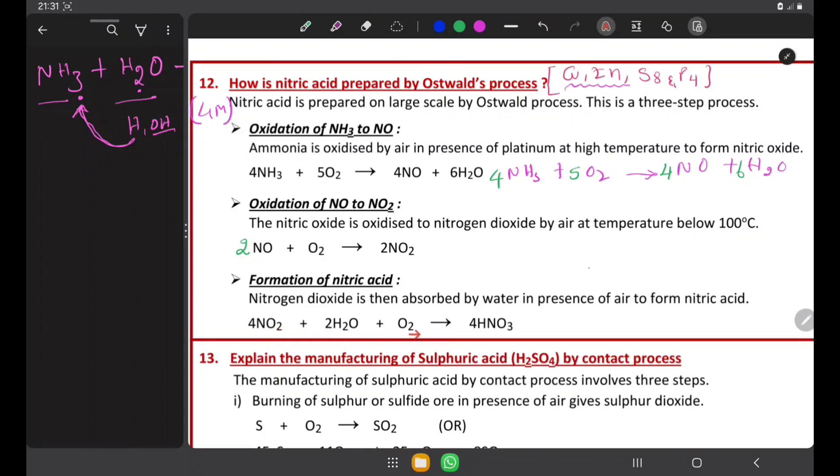4NO2 + 2H2O + O2 gives 4HNO3. That is all the formation of nitric acid by Ostwald's process.